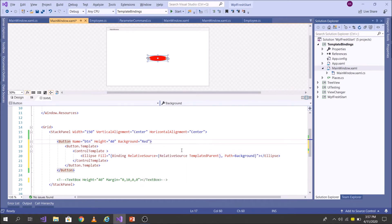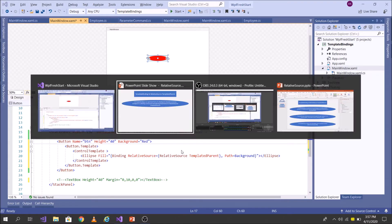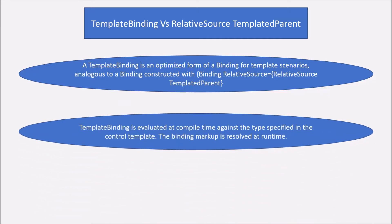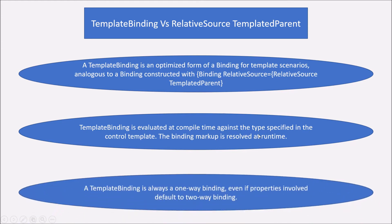So coming back to the key difference: TemplateBinding is evaluated at compile time against the type, whereas the Binding markup with RelativeSource TemplatedParent is resolved at runtime. That is one advantage of TemplateBinding in terms of performance.